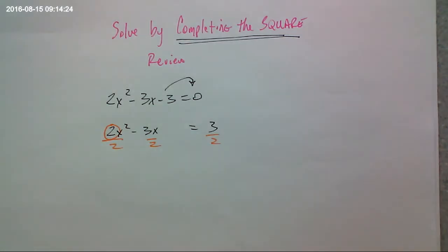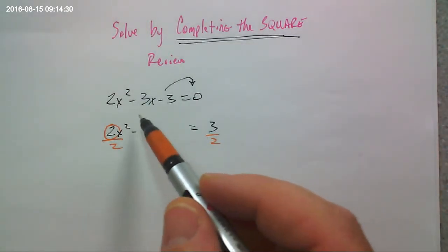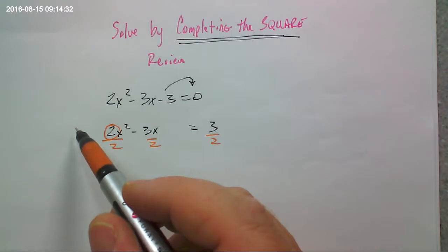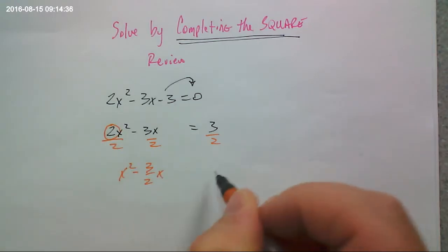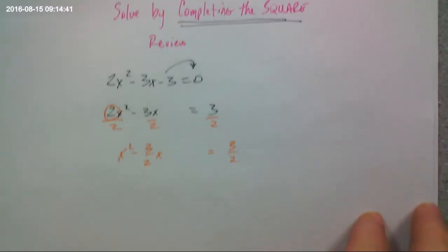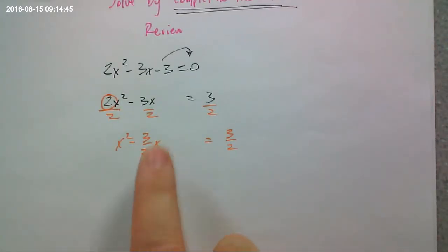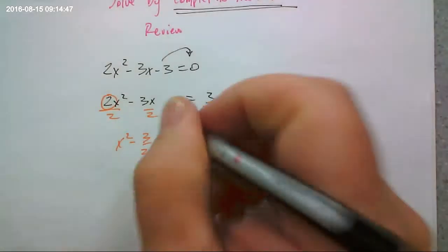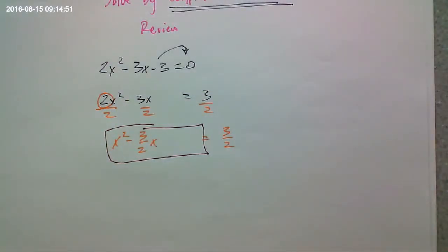Now, we're going to solve by completing the square. So, see how that number right there, the coefficient, is 2? It's not 1. So, we've got to make that 1. We're going to divide everything by 2. If we were just changing to vertex form, we wouldn't divide everything by 2 the same way. We'd factor out the 2, remember? So, x² - 3/2x = 3/2. All good so far?